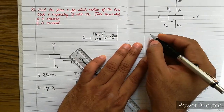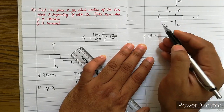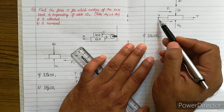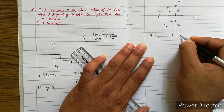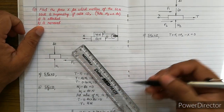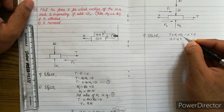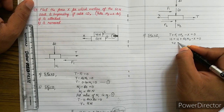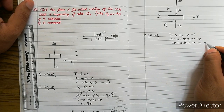Applying summation Fx = 0 for the 60N block: T (right, positive) + F1 (right, positive) + F2 (right, positive) − X (left, negative) = 0. Substituting T = 16N, F1 = 16N, and F2 = μs·N2 = 0.40·N2: 16 + 16 + 0.40·N2 − X = 0, giving 32 + 0.40·N2 − X = 0. There are two unknowns, N2 and X, so we call this Equation 2.